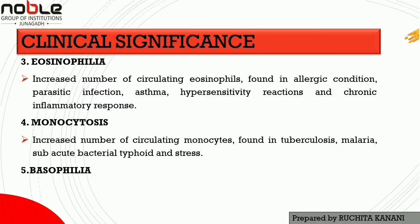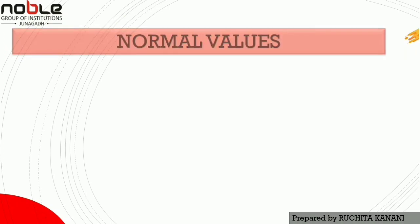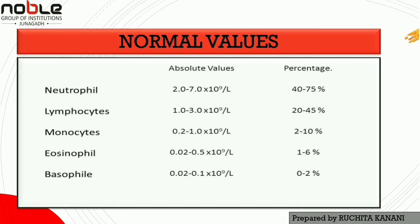The fifth is basophilia, which is usually observed in chronic myeloid leukemia — a slowly progressing and uncommon type of blood cell cancer that begins in the bone marrow. The normal values are represented as percentages: neutrophils 40–75%, lymphocytes 20–45%, monocytes 2–10%, eosinophils 1–6%, and basophils 0–2%.